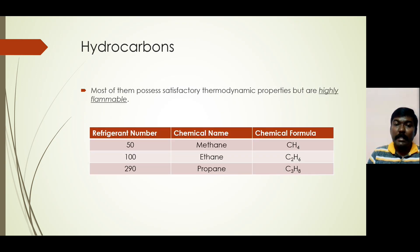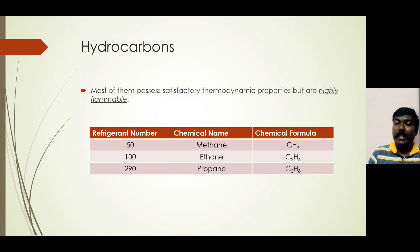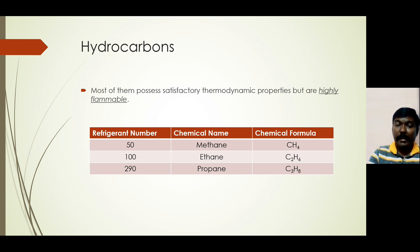Then we have hydrocarbons — methane, ethane, propane — compounds comprising carbon and hydrogen. These are called hydrocarbons and they possess satisfactory thermodynamic properties fit for selection as a refrigerant. But the only disadvantage is because they have the component carbon, they are highly flammable. So in most real case scenarios, we avoid using hydrocarbons as refrigerants because they are flammable.